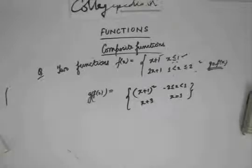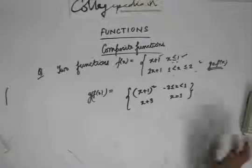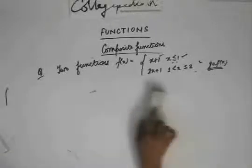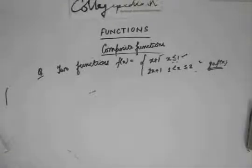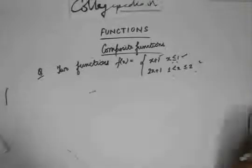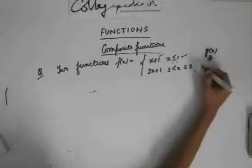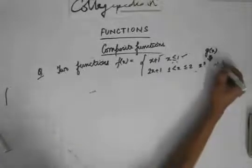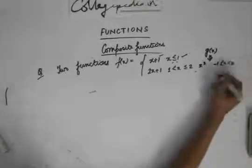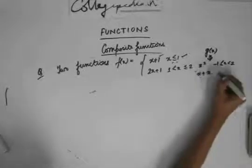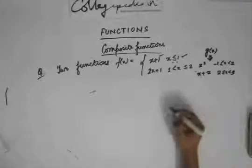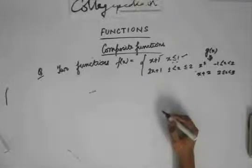This solution for composite functions could also be derived using graphs. Let's see how. I'm asked to find f(g(x)), given f(x) and g(x). Let's write g(x) again: g(x) is x² when x lies between -1 to 2, and g(x) is x + 2 when x lies between 2 to 3.